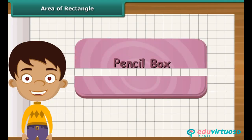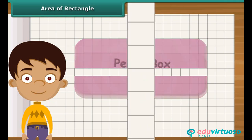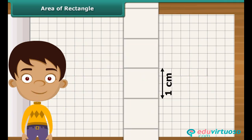The breadth of the box is 8 centimeters. Arrange 8 squares of side 1 centimeter along its breadth.